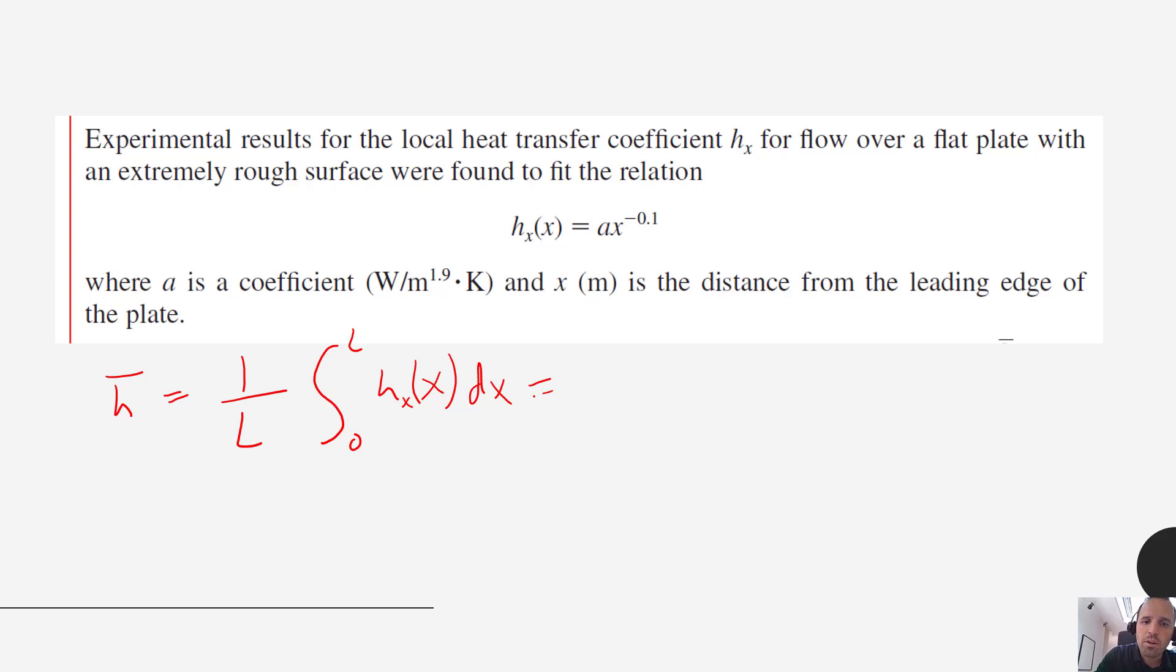We have a specific empirical relationship here given so we can go ahead and plug that in. So that's 1 over L times the integral from 0 to L of ax to the negative 0.1 dx.